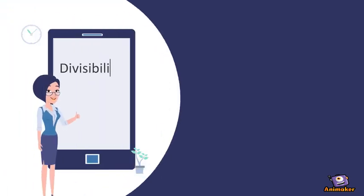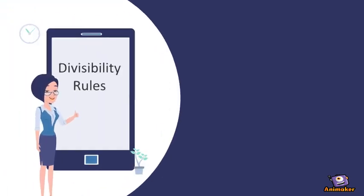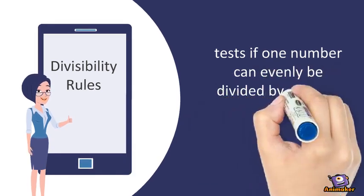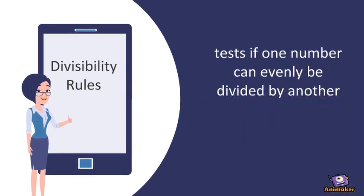But first let's go over the meaning of divisibility rules. Divisibility rules are tests if one number can evenly be divided by another number.